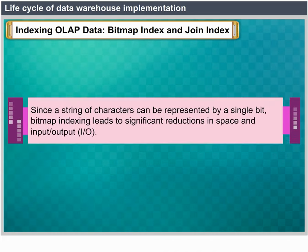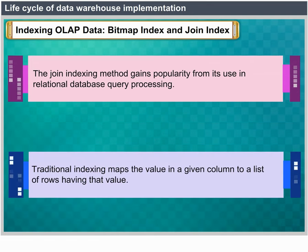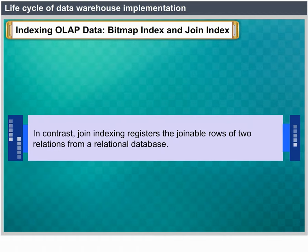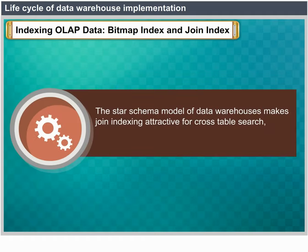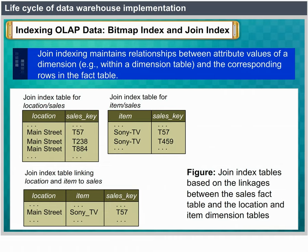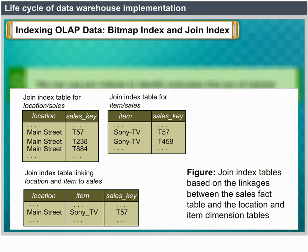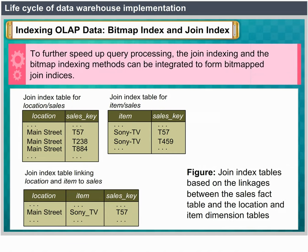The join indexing method registers the joinable rows of two relations from a relational database. The star schema model makes join indexing attractive for cross-table search because of the linkage between a fact table and its corresponding dimension tables (fact table's foreign key and dimension table's primary key). Join indexing maintains relationships between attribute values of a dimension and the corresponding rows in the fact table. Join indices may span multiple dimensions to form composite join indices and can be used to identify subcubes of interest. The join indexing and bitmap indexing methods can be integrated to form bitmapped join indices to further speed up query processing.